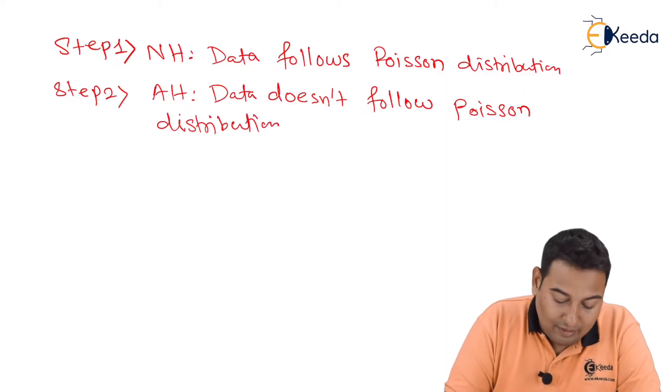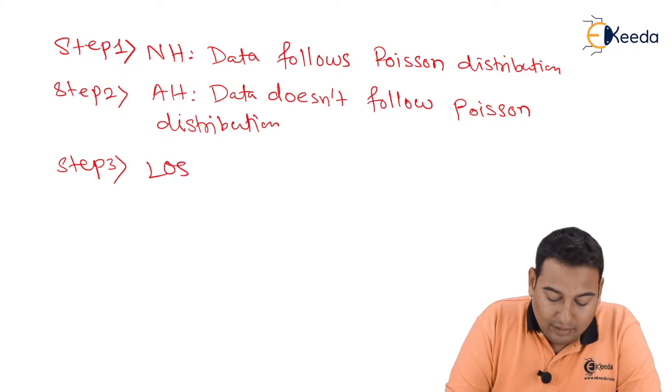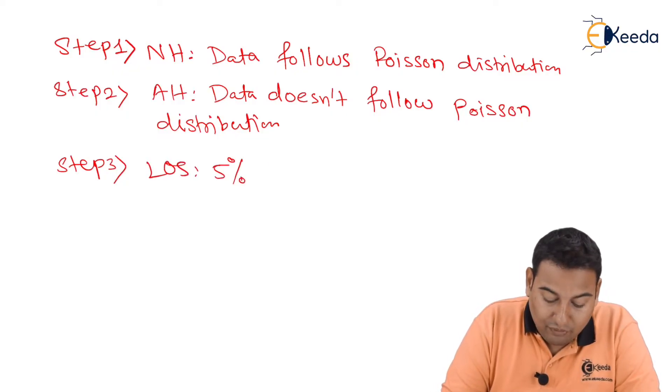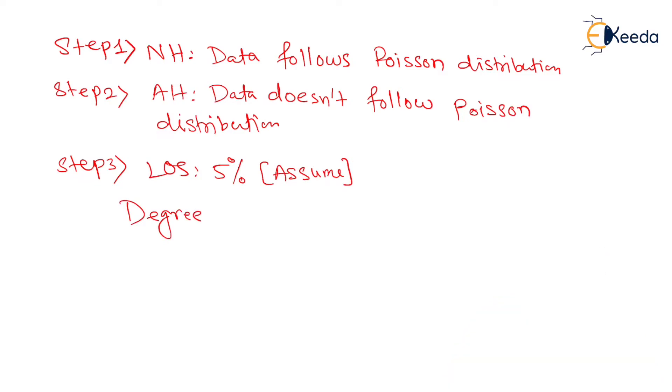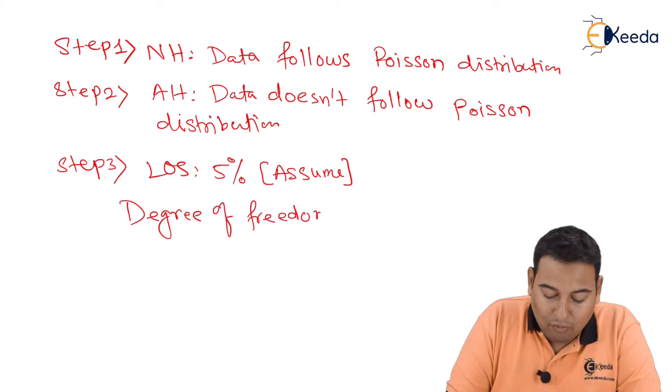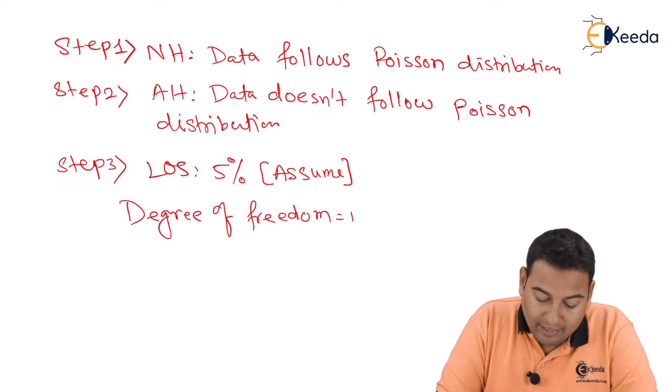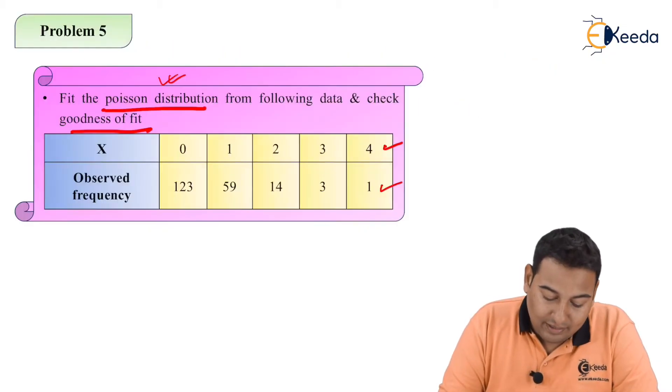Let's move on to the third step, that is step number three: level of significance. Nothing mentioned, five percent we're going to assume. Here we need a concept called degree of freedom. The formula for degree of freedom is n minus one.